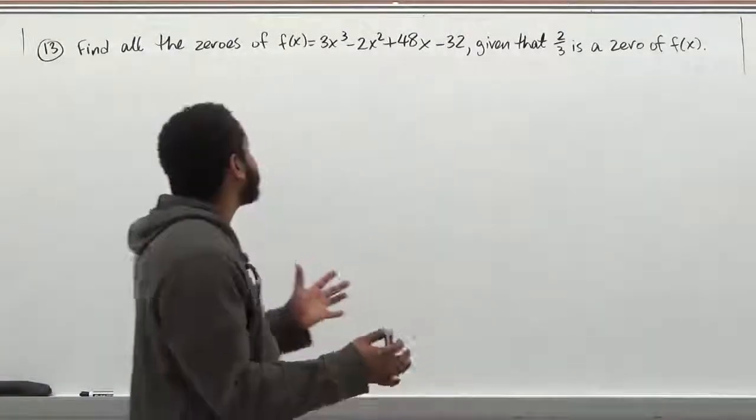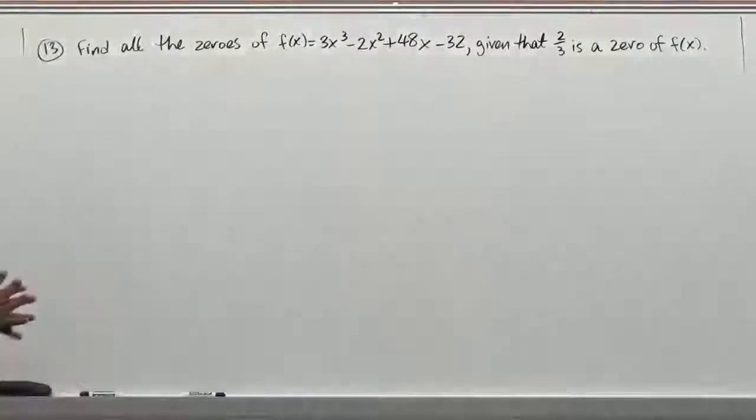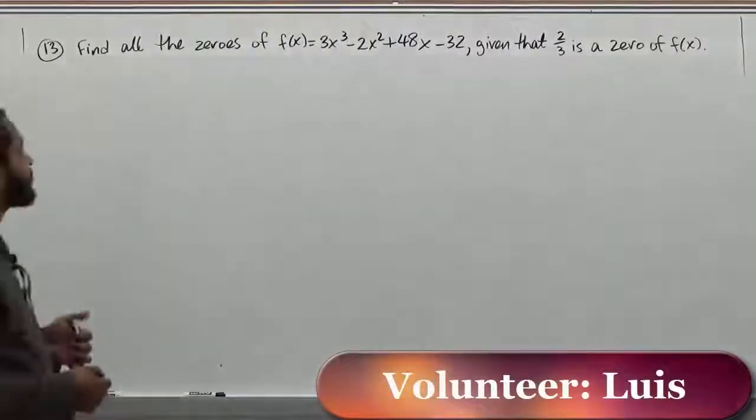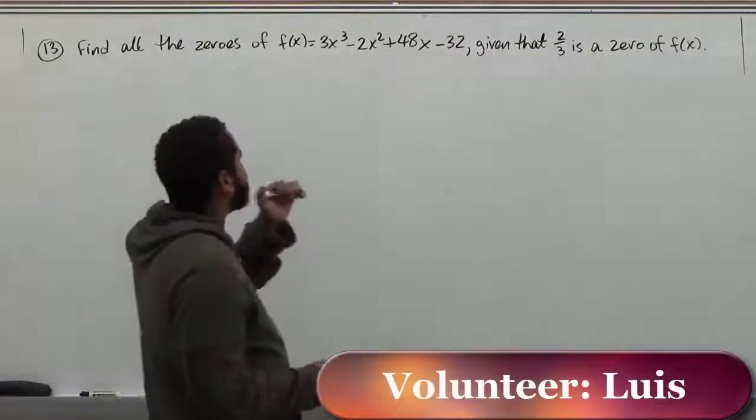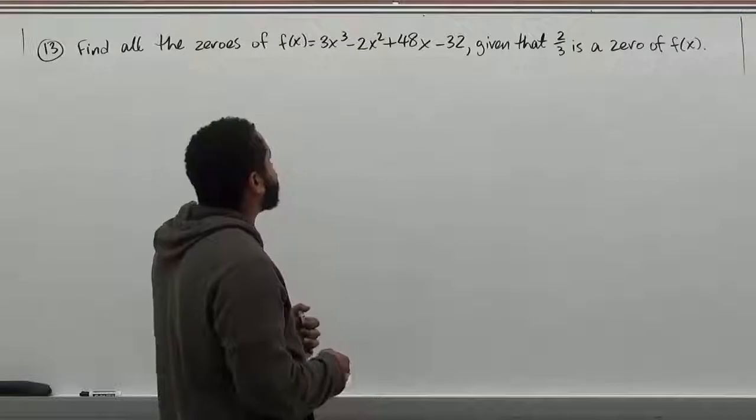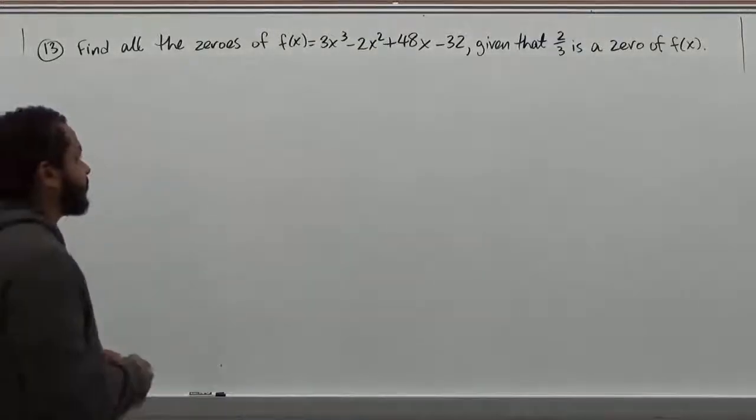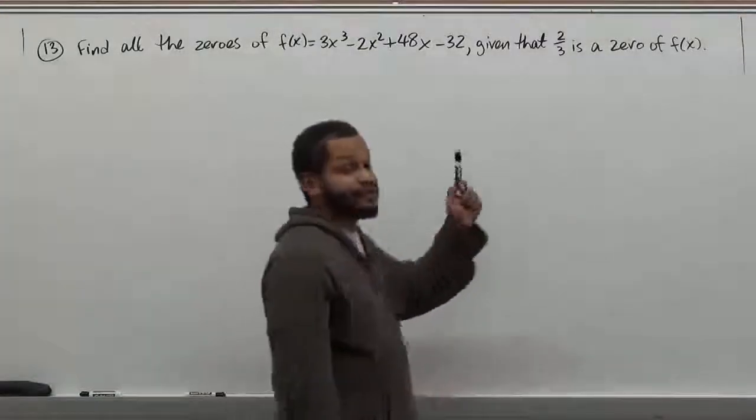Welcome to HelpYourMath.com. In this problem, we're given a problem that says find all the zeros of f(x) = 3x³ - 2x² + 48x - 32, given that 2/3 is a zero of f(x).